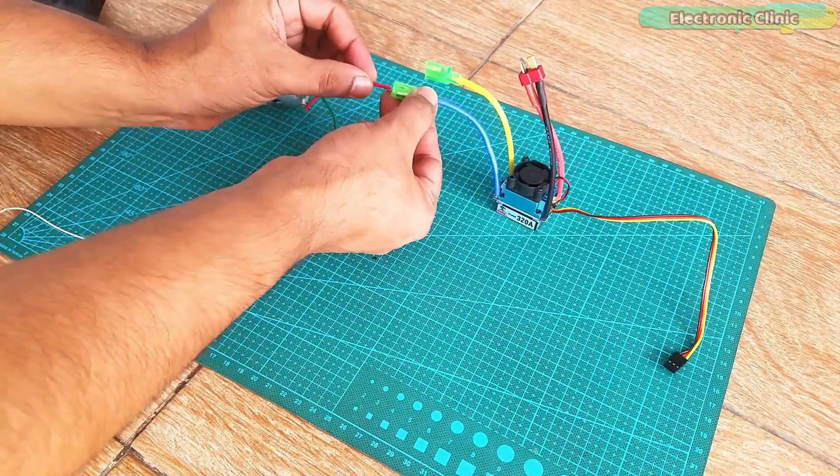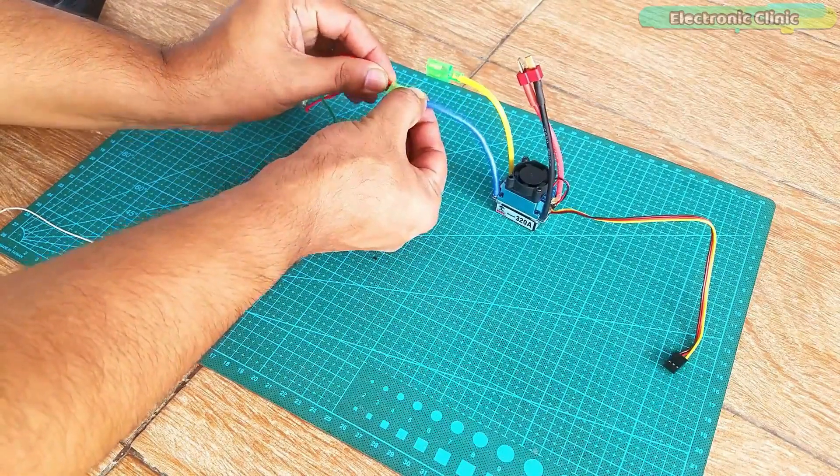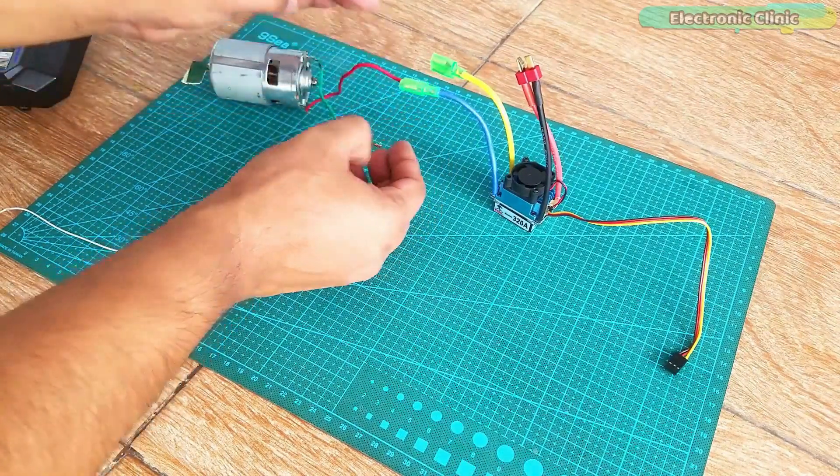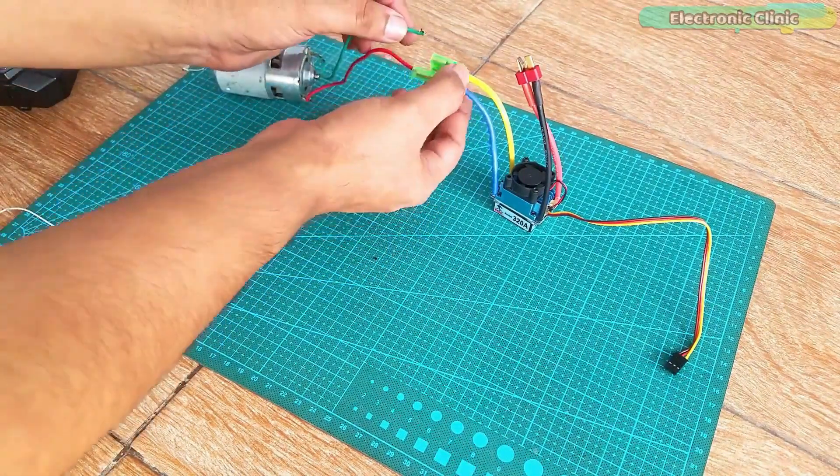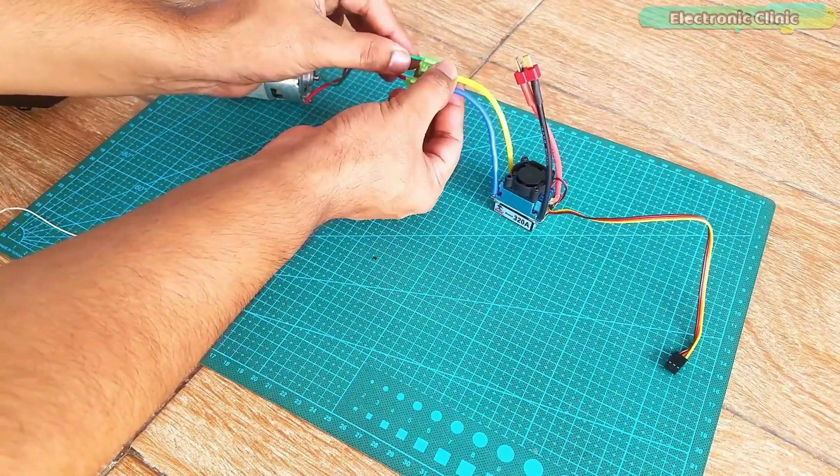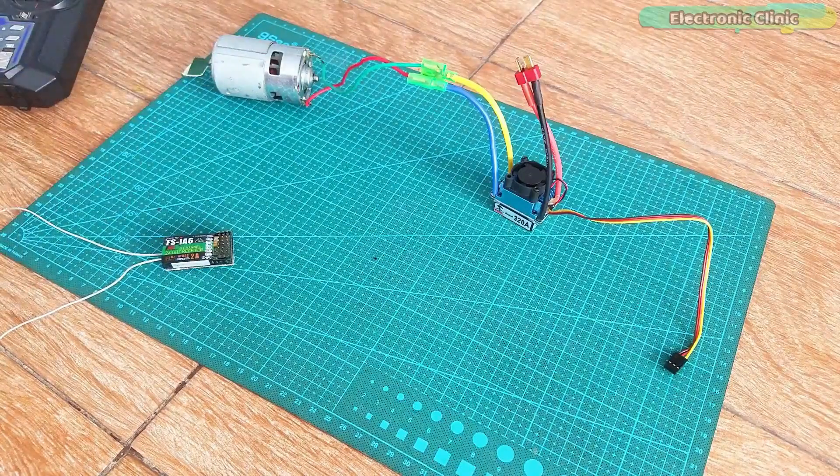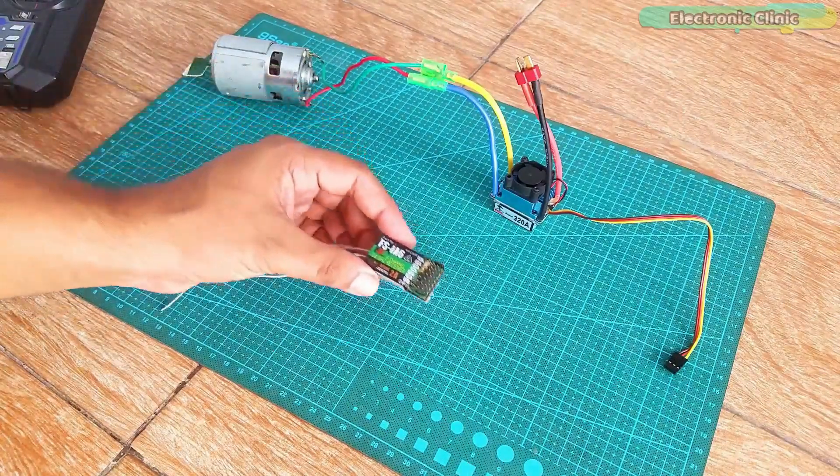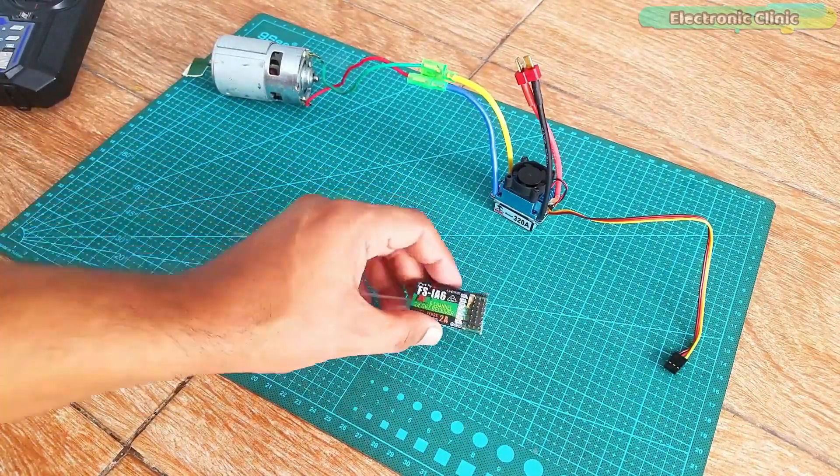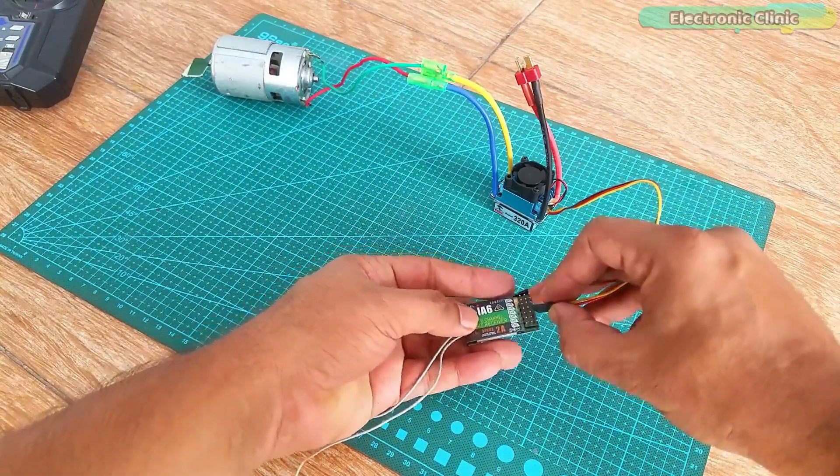Connect the two wires of the 775 DC motor with the two output wires of the 320 ampere brushed ESC DC motor speed controller and the polarity doesn't matter. Now connect the control signal wires with the receiver channel 3 which is the throttle channel.